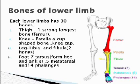Now the lower limb. The thigh has one strongest and longest bone called the femur. In the knee, there is the patella, a cup-shaped bone also known as the kneecap. The leg has two bones: tibia and fibula. The foot has seven tarsals, five metatarsals, and fourteen phalanges.